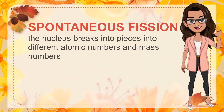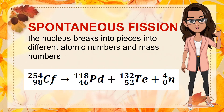In spontaneous fission, the nucleus breaks into pieces with different atomic numbers and mass numbers. This occurs in very massive nuclei. For instance, californium-254 undergoes spontaneous fission, making various sets of fission products. One possible set can be represented as shown. In nuclear reactions, the parent nucleus is on the left side of the equation, the daughter nucleus and emitted particle are on the right side, and the number of nucleons is always conserved.